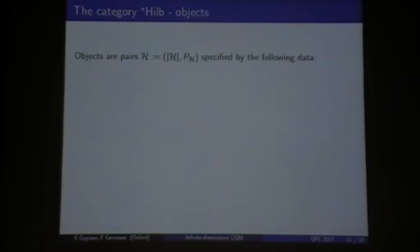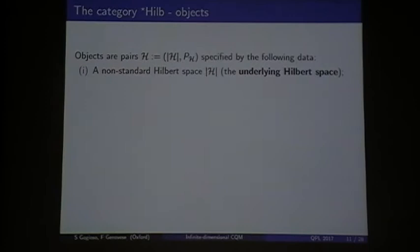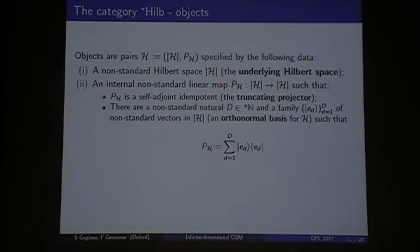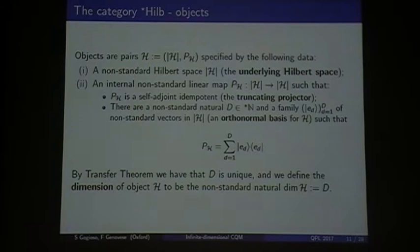Our objects are pairs, where H is a non-standard Hilbert space, and pH is a non-standard linear map from H to H, that we call truncating projector, that is self-adjoint and idempotent, and we know that there are non-standard naturals, and a family of non-standard vectors that are basically a basis, such that this decomposition is true, this equation is true. This is true because of transfer theorem. We have, by transfer, that this d is unique, and we can basically call this the dimension of our Hilbert space, non-standard Hilbert space. This can be a non-standard number, so it can be unlimited, naturally.